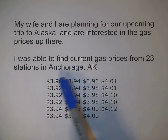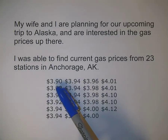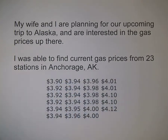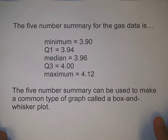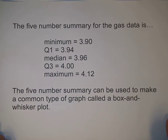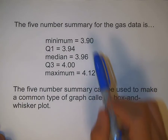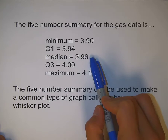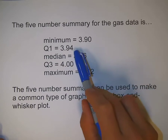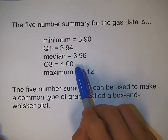So we can see they're all in order here. They range from $3.90 — these are all in dollars per gallon — and the most expensive gas was $4.12. So what I did next was found the five-number summary for the gas data. The minimum was $3.90, maximum was $4.12, median was $3.96, Q1 was $3.94, and Q3 was $4.00.